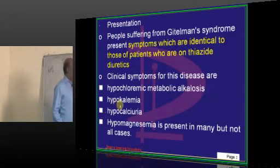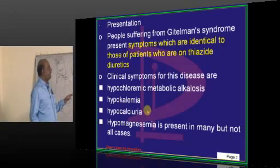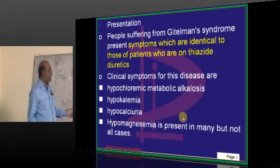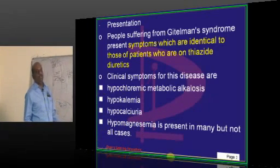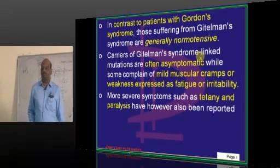So what do they have? They have hypokalemia, just like thiazide diuretic — hypokalemia, hypocalciuria, hypomagnesemia, hypochloremic metabolic alkalosis. That is what they typically have.